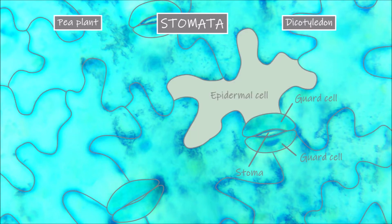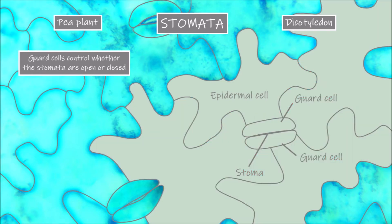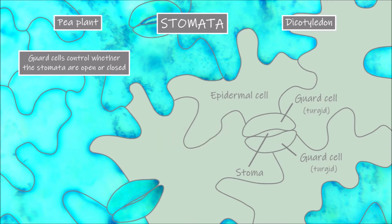These guard cells function in controlling whether the stomatal pores are open or closed. When the guard cells are flaccid, the stomatal pore is closed and CO2 cannot enter into the leaf. When the guard cells are turgid, the stomatal pore is open and allows CO2 to enter and diffuse into the cells to be used in the process of photosynthesis.